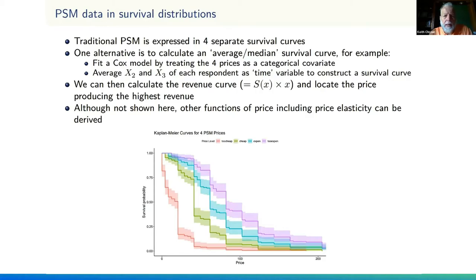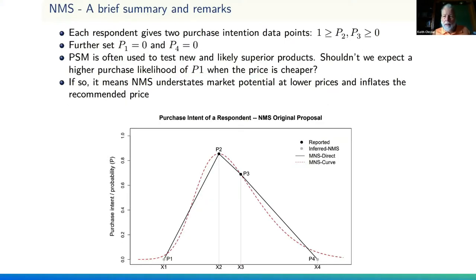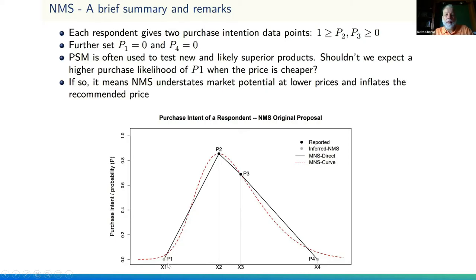Ming also noted something contrary to economic theory in the Newton Miller Smith extension. They ask purchase intent questions at the cheap and expensive price points, but not at too expensive — assuming purchase probability is zero there — and not at too cheap, again assuming purchase intent is zero. But in economic theory, if something gets really, really cheap, more people buy it. If you give it away free, lots of people take it. This means you're probably overstating the point of maximum revenue by ignoring the huge volumes available at low prices.